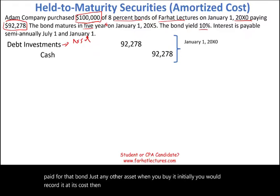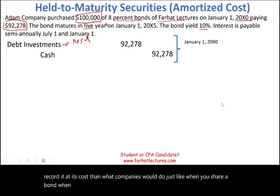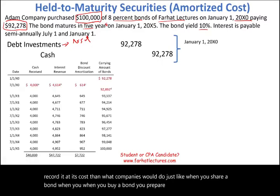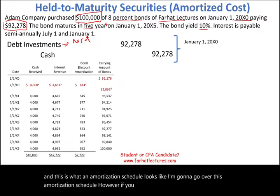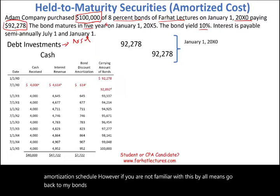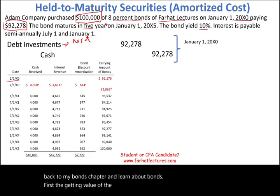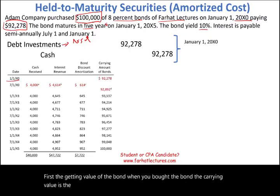Just like when you issue a bond, when you buy a bond you prepare an amortization schedule. This is what an amortization schedule looks like — I'm going to go over it. If you are not familiar with this, go back to my bonds chapter. First, the carrying value of the bond when you bought it is the cost, which for this discount bond is $92,278. Then six months later, on July 1st, the bond will make its first payment.